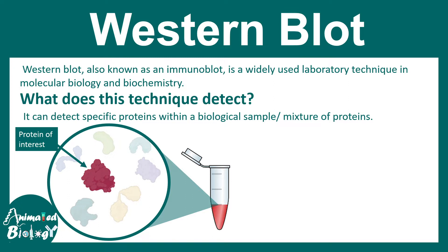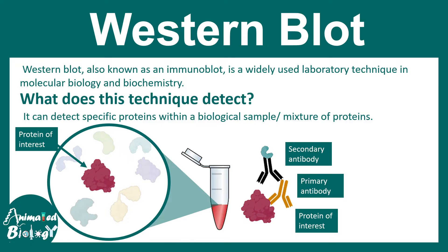The way Western blot works is through antigen-antibody interaction. The protein of interest is detected by a primary antibody, followed by a secondary antibody which is linked to some enzyme. This is why Western blot is also termed an immunoblot, because it utilizes the principle of antigen-antibody interaction.